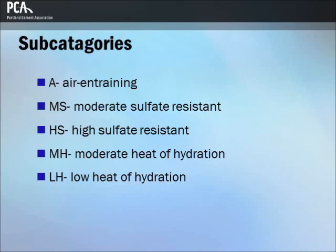Both types of Type IS cements include subcategories for optional special properties such as air entrainment, moderate sulfate resistance, high sulfate resistance, or moderate heat of hydration. Type IS cements can indicate moderate heat of hydration or other properties by adding the suffixes A, MS, HS, LH, or MH.